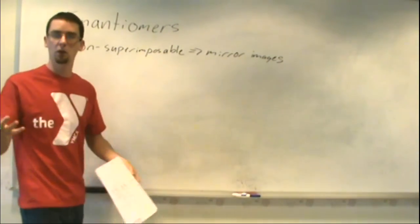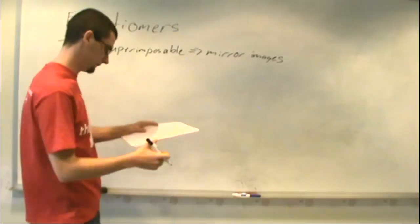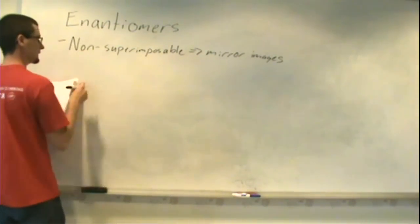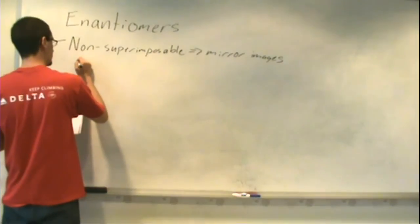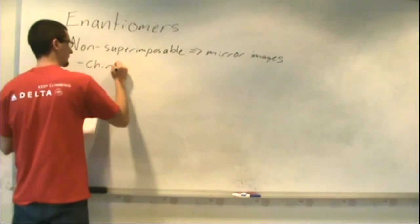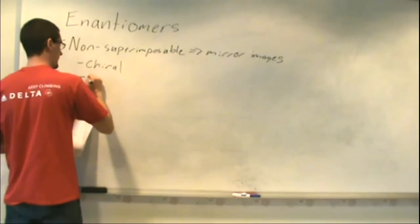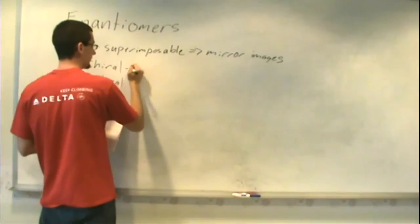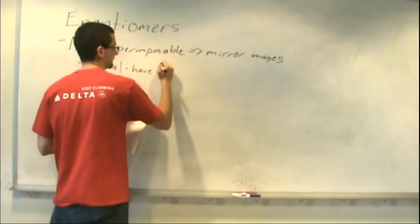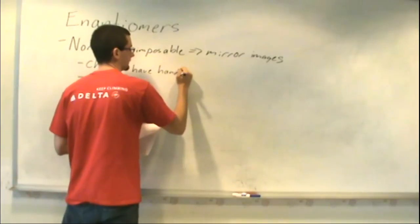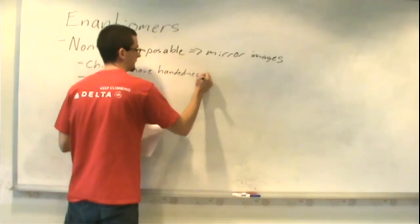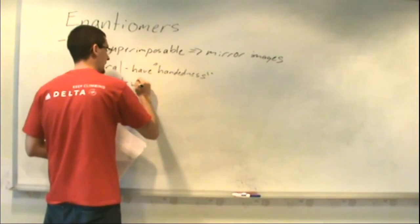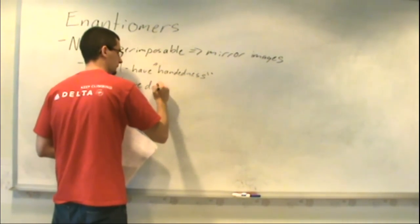Like I showed you with those models, you can't overlay the two on top of one another. You can have two types of substances — either chiral or achiral. In the case of chiral, we have handedness, and in the case of achiral, we do not have handedness.